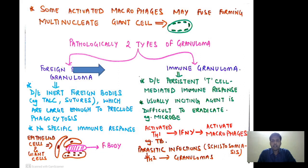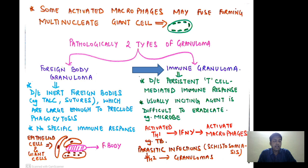Immune granuloma occurs because of a persistent T-cell-mediated immune response, usually when the inciting agent is difficult to eradicate. Activated T helper 1 cells release interferon gamma, which activates macrophages — this occurs, for example, in tuberculosis, the prototype of granulomatous inflammation. Certain parasitic infections, for example schistosomiasis, lead to activation of T helper 2 cells, which are involved in formation of granuloma in parasitic infections.